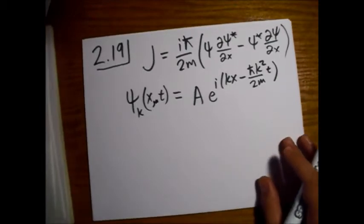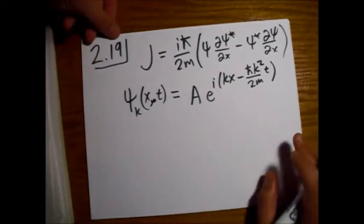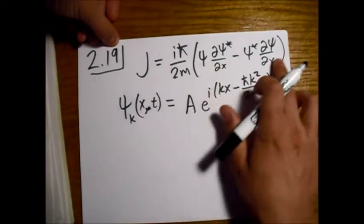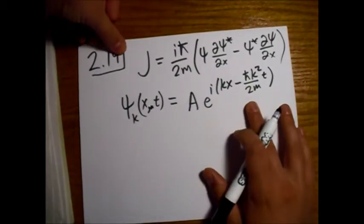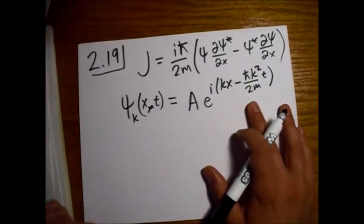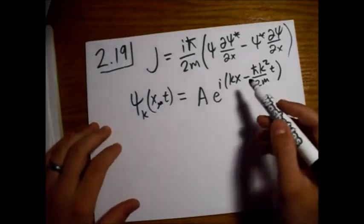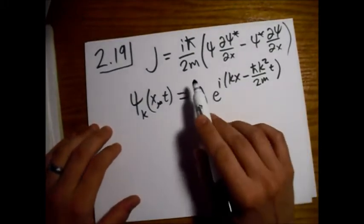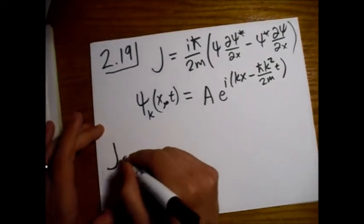So now what we need to do is just start taking these derivatives and things, and then we find what J is. So if J is positive, then we expect a current in the positive direction, to the right. And if J is negative, then it'll go in the negative direction. All right, get started.